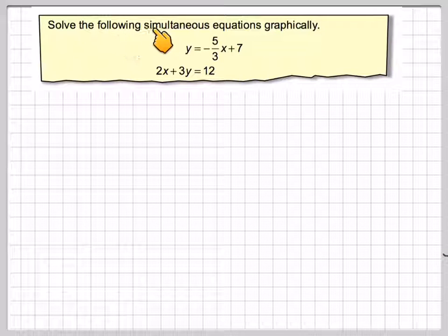For the second example, we're going to solve the following simultaneous equation graphically. y is equal to minus 5 over 3x plus 7, and 2x plus 3y is equal to 12, using the GDC.